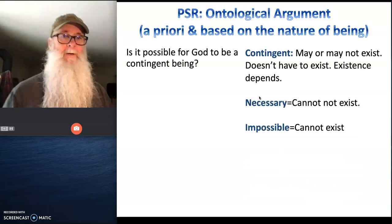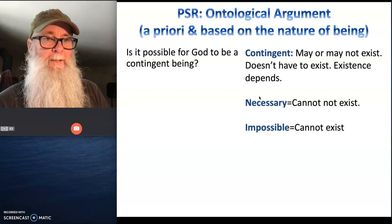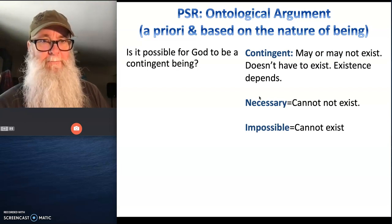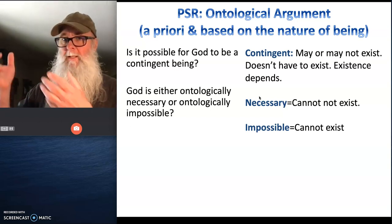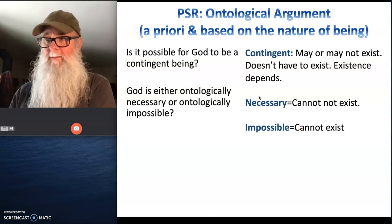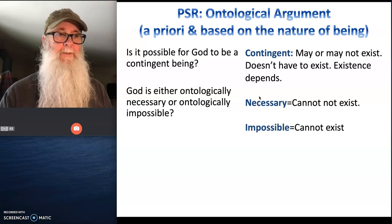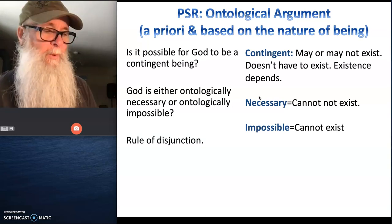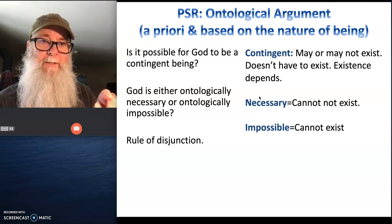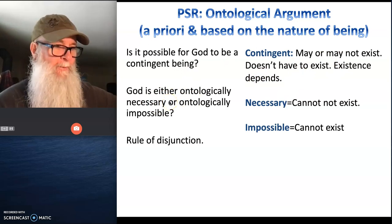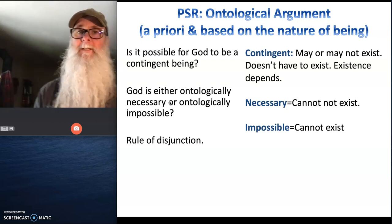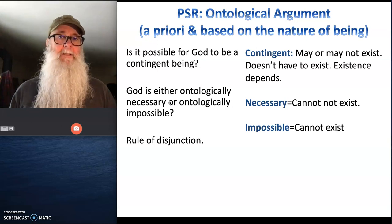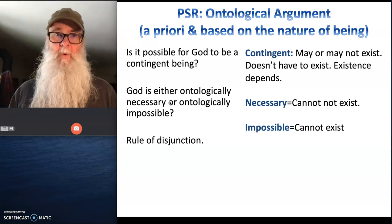That leaves us with two other options: God is either necessary or impossible. We've phrased this as an either-or question. God is either ontologically necessary and can't not exist, or God is ontologically impossible and couldn't exist. The rule of disjunction says that if you eliminate one of these two possibilities, then by definition the remaining option has to be true. So the question for us is: is God ontologically necessary or ontologically impossible? Can you eliminate one of those?